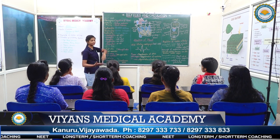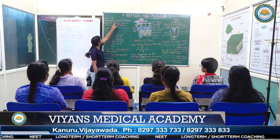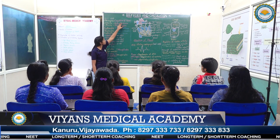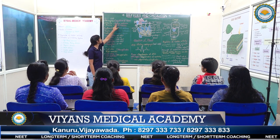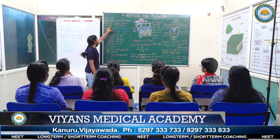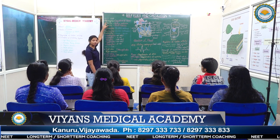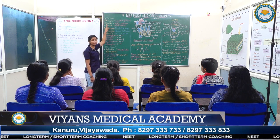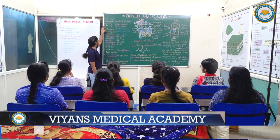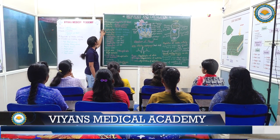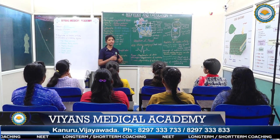Let us discuss what functions these proteins perform. Fibrinogens help in coagulation of blood. Globulins help in the defence mechanism. Albumins help in osmotic balance. These proteins are very important from an examination point of view, so all of you concentrate on these three proteins. Now let us discuss formed elements.